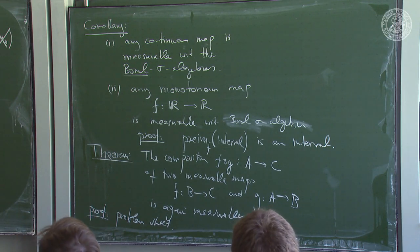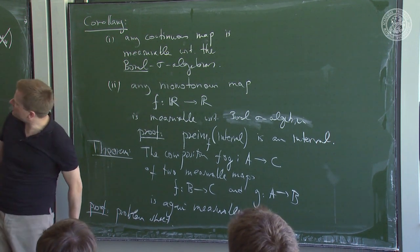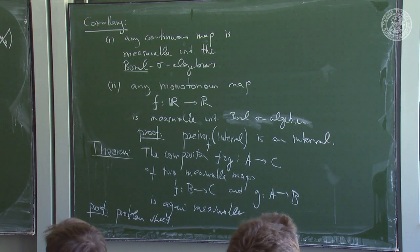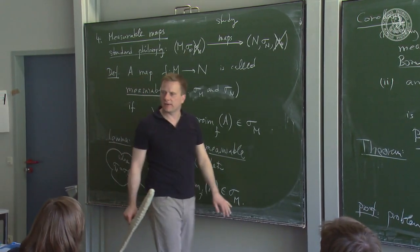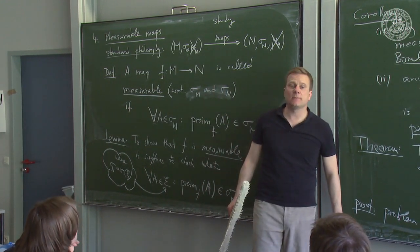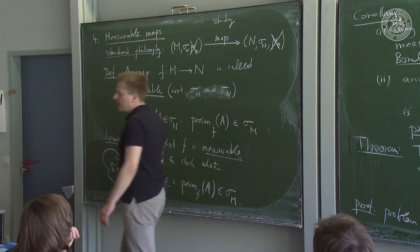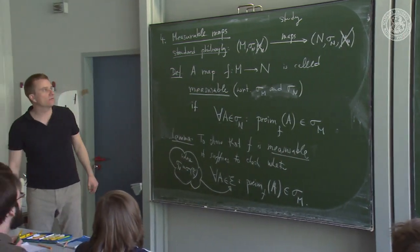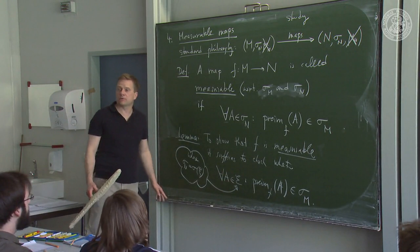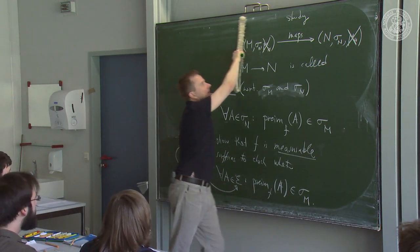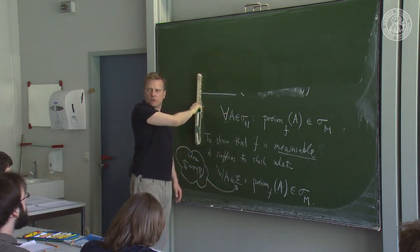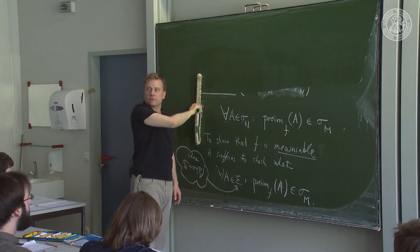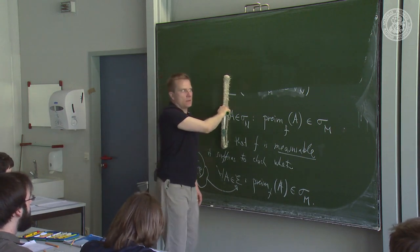Measurable maps into ℝ̄ will, with one minor extra condition of finiteness, be precisely the functions we can integrate. This gives many more integrable functions than the Riemann integral allows. It is the proper notion of integral we need to define the square-integrable functions of quantum theory.